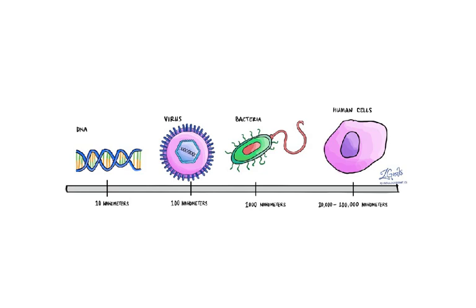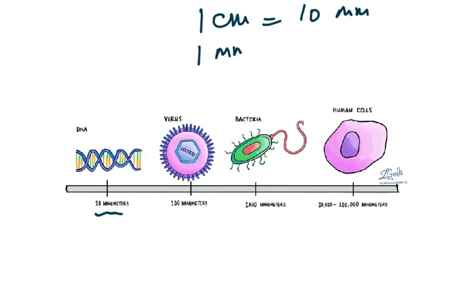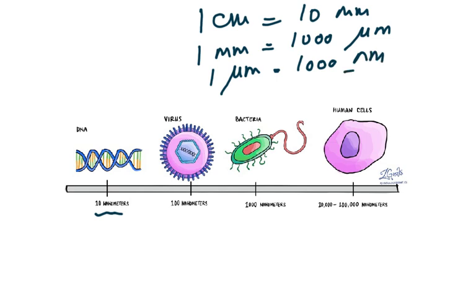As this is the first video on this chapter, I want you to develop some very important concepts of biology. First, look at DNA — DNA is smallest at 10 nanometers. Let's get the units right: 1 centimeter equals 10 millimeters, 1 millimeter equals 1000 micrometers, and 1 micrometer equals 1000 nanometers. So nanometer is the smallest unit, and DNA is 10 nanometers.